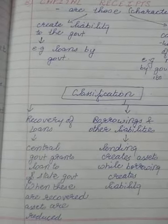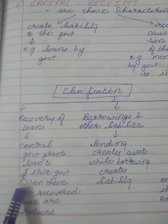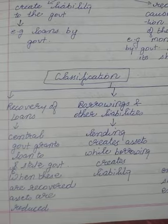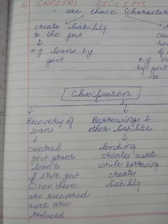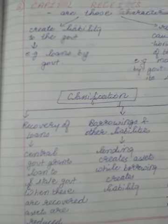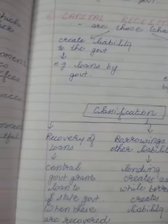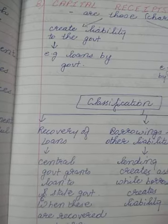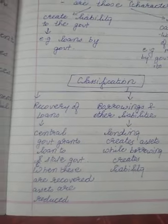How do we recover loans? The central government grants loans to the state government. When these loans are recovered, assets are reduced — because the state government will repay the loan. So, when the state government repays the loan, this is a capital receipt.